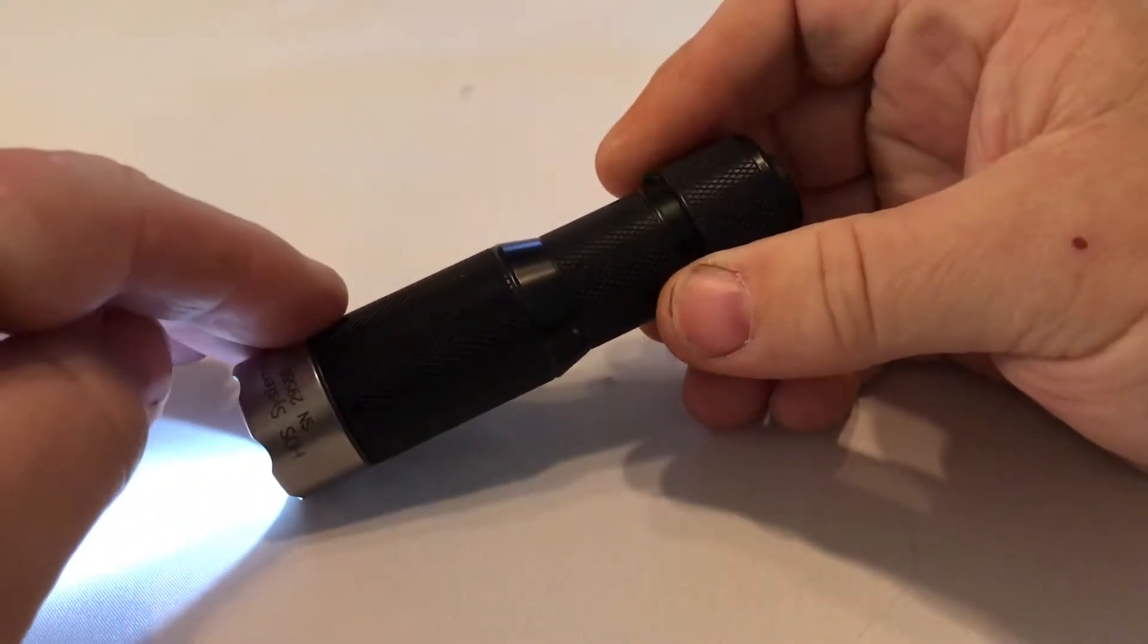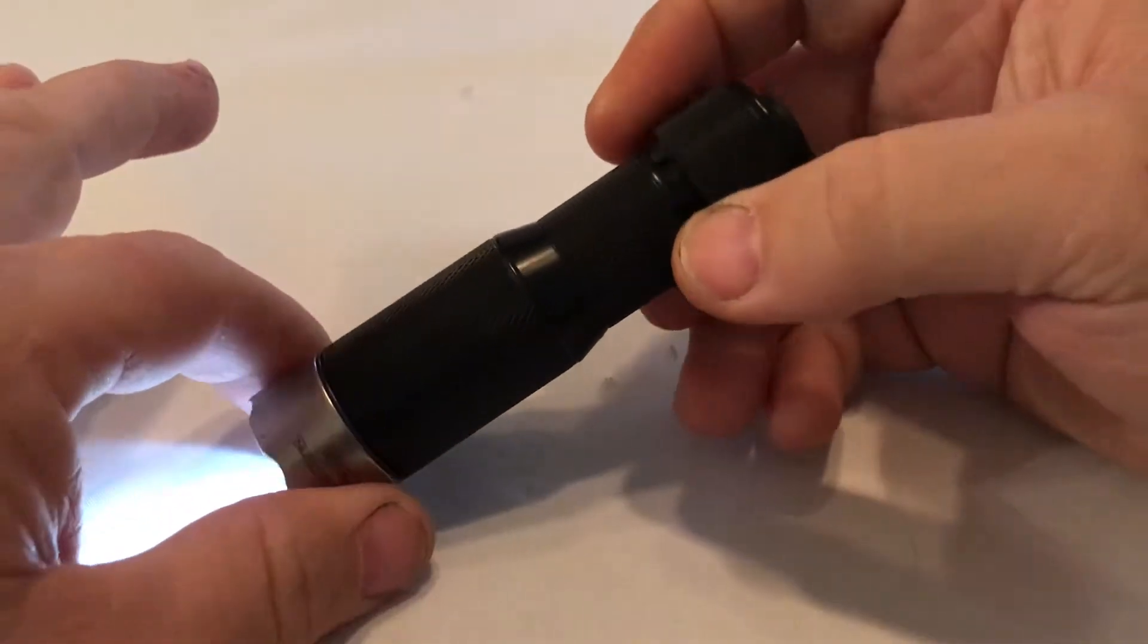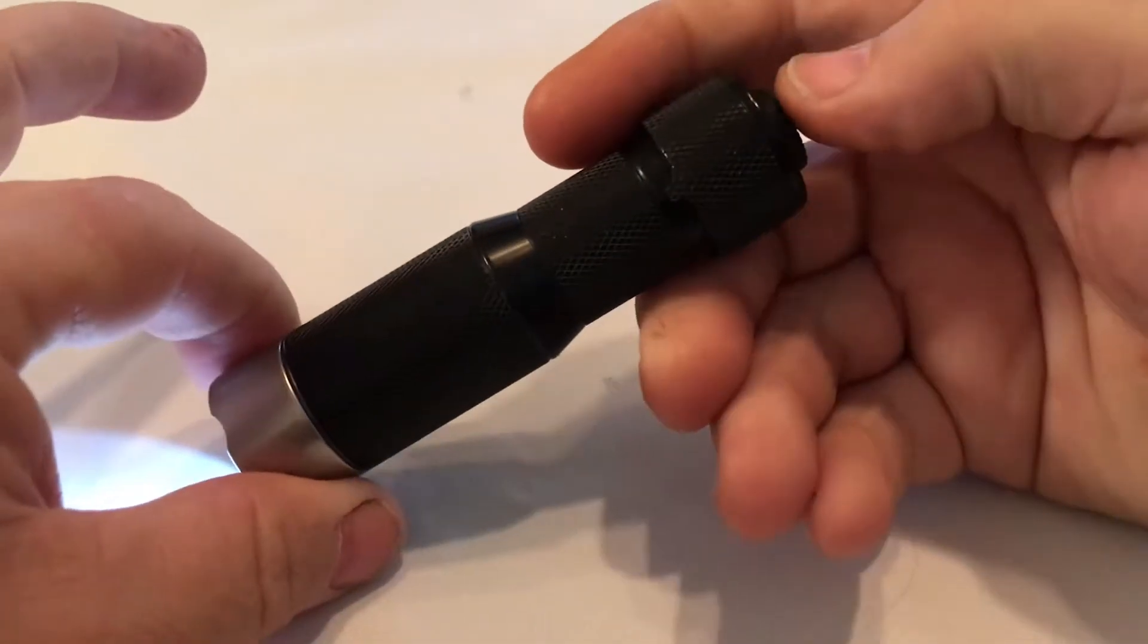But let's say I want this light to remember the last preset that I used. So, I'm going to turn the light on. I've enabled customization. I'm going to get into the options menu.